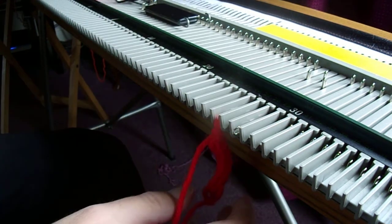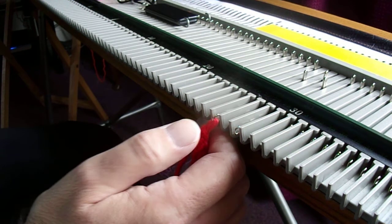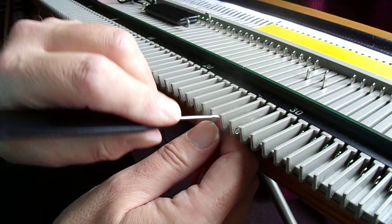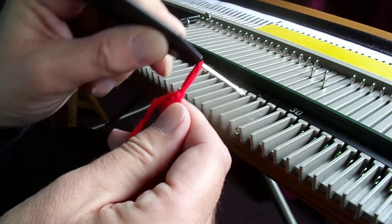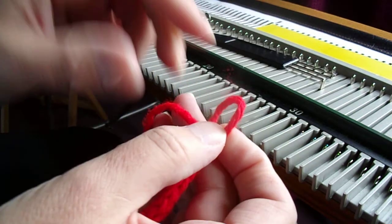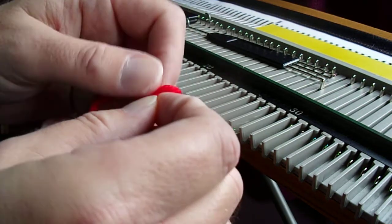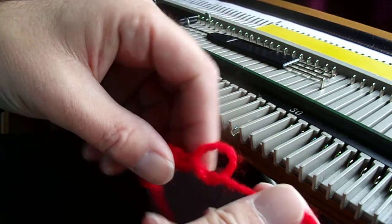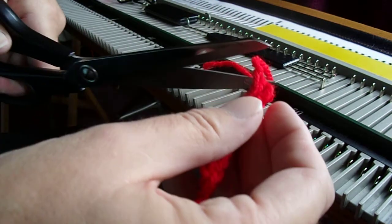So now we're just going to knit the end off. Take it off onto the prong, pull it like that to make the loop big enough and just pass the end through. Pull it tight, snip off the excess.